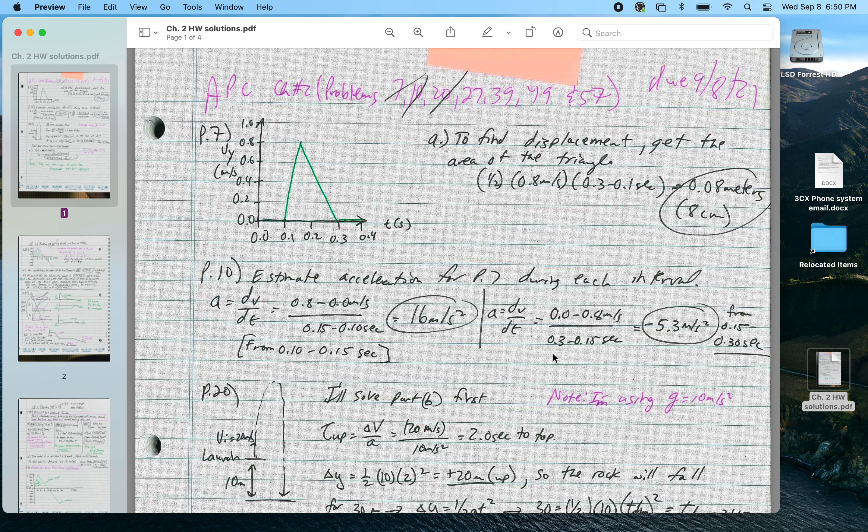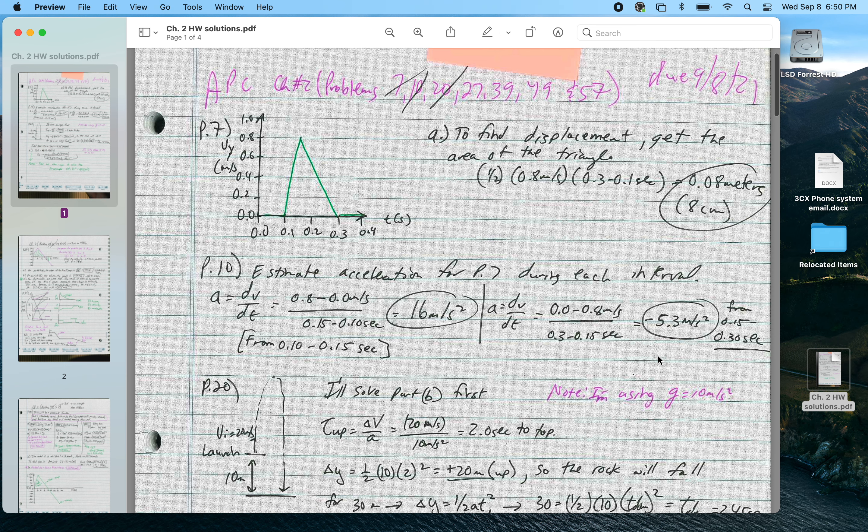And from 0.15 to 0.30 seconds, the slope is negative 5.3 meters per second squared, one-third the magnitude of acceleration because we have three times the time interval for the same change in speed.